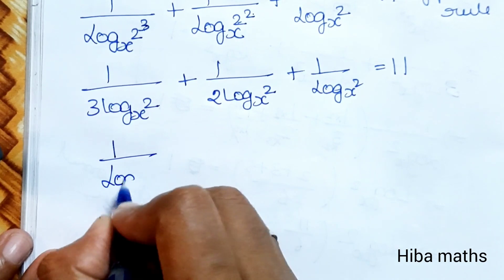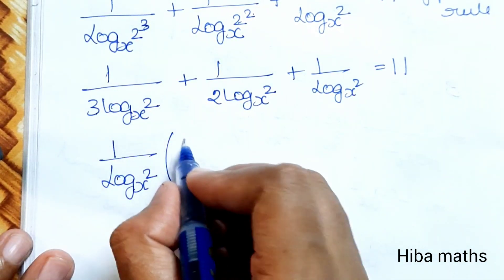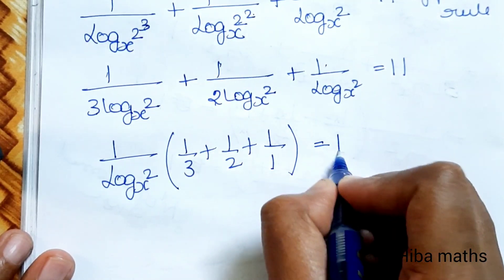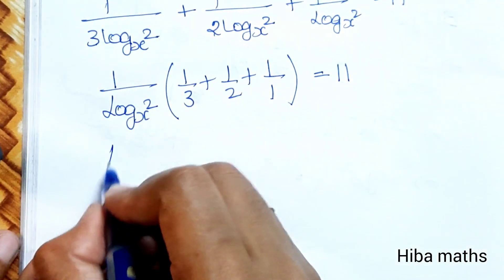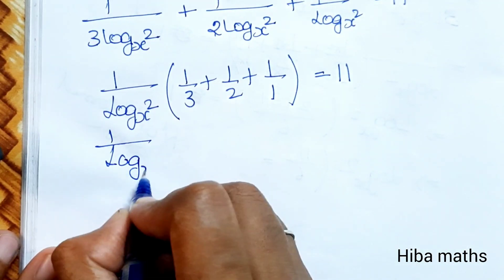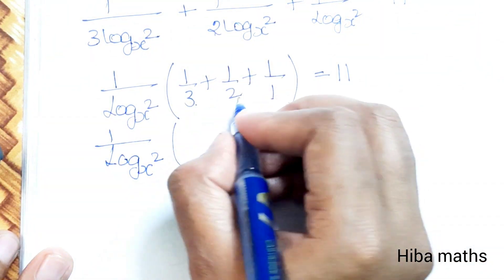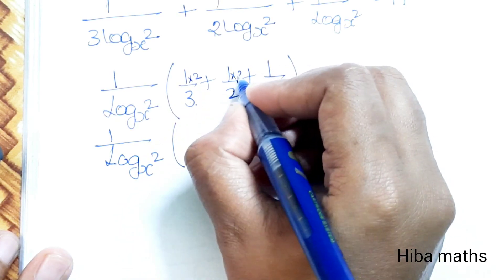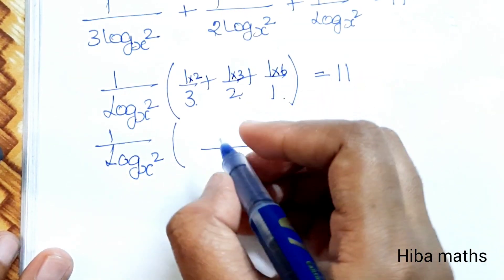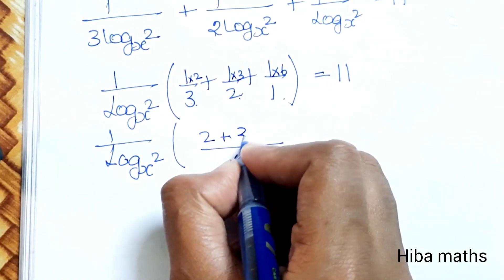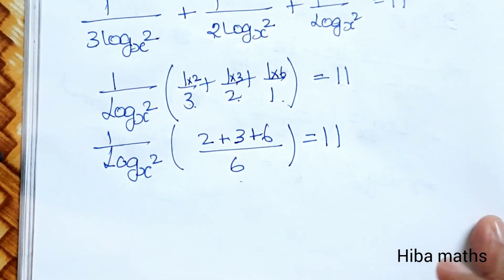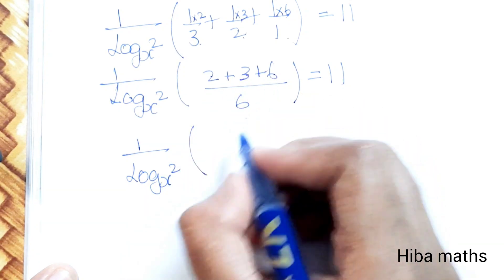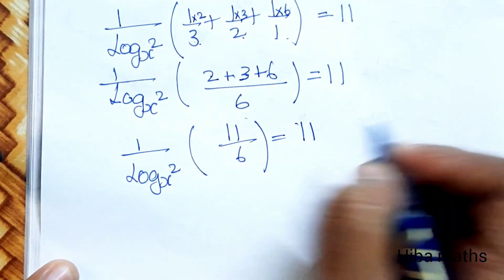Combining the coefficients: 3 plus 2 plus 1 equals 6. So 6 multiplied by (1 by log base x of 2) equals 11. Therefore, 1 by log base x of 2 equals 11 over 6. That gives us 11 by 6 is equal to 11 divided by 6 on the left side.